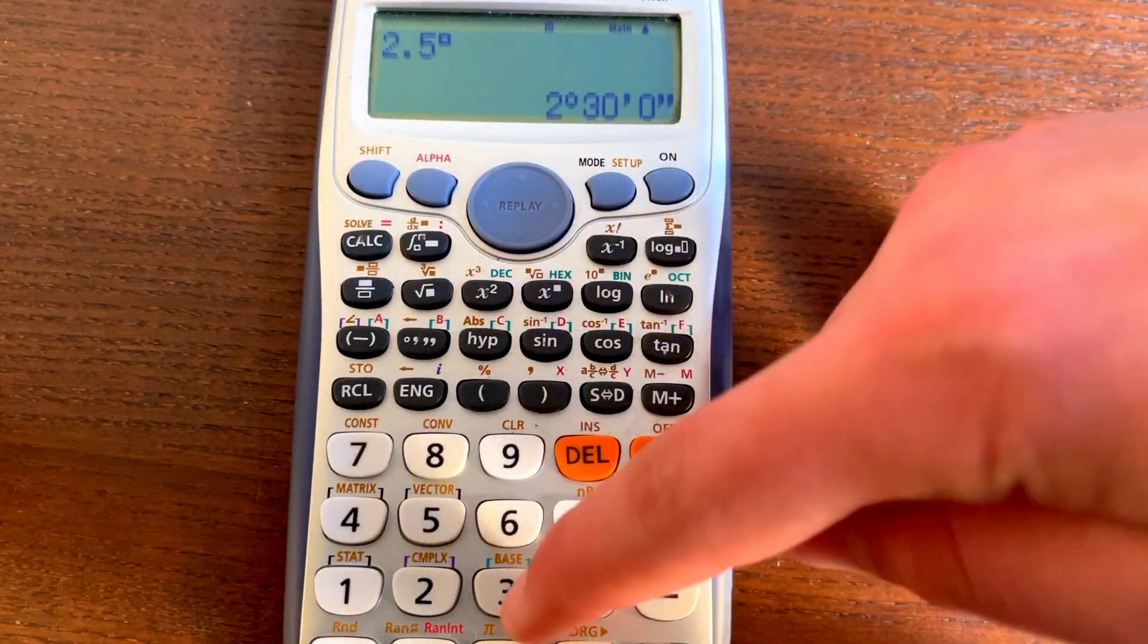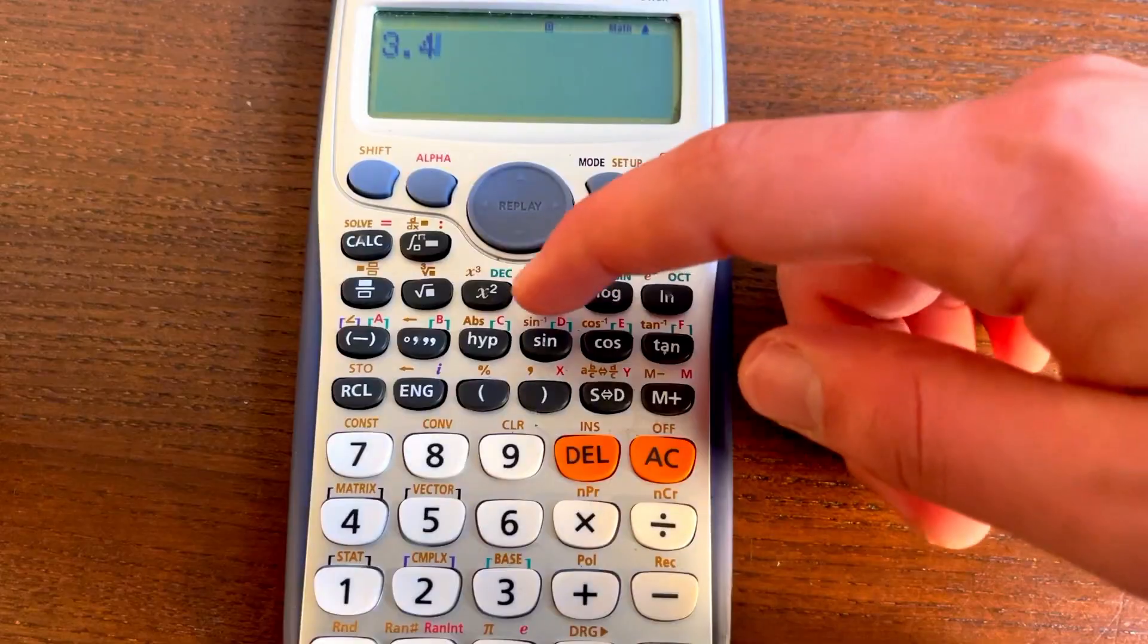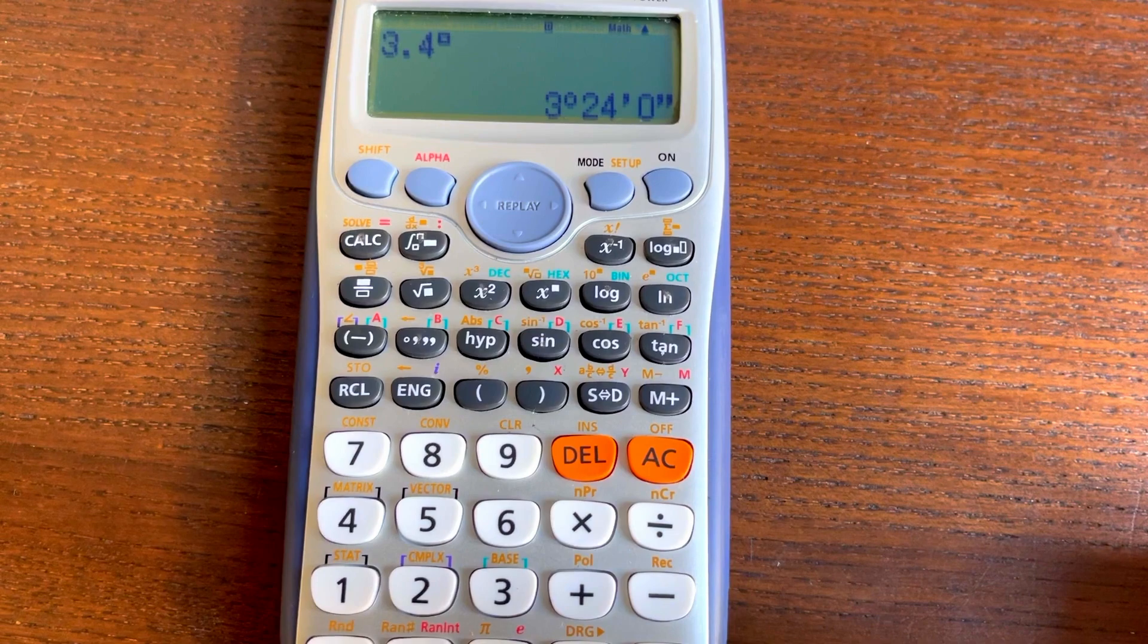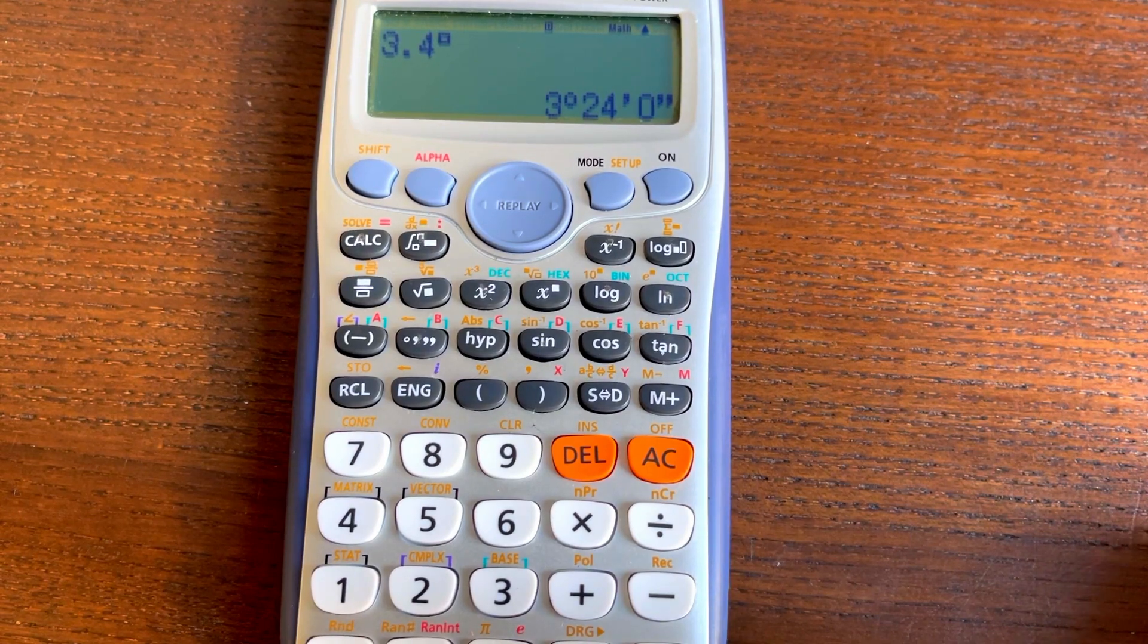Now I can do the exact same thing with other numbers, so 3.4 for example, and then click this and then click equals and I get 3 hours, 24 minutes and 0 seconds.